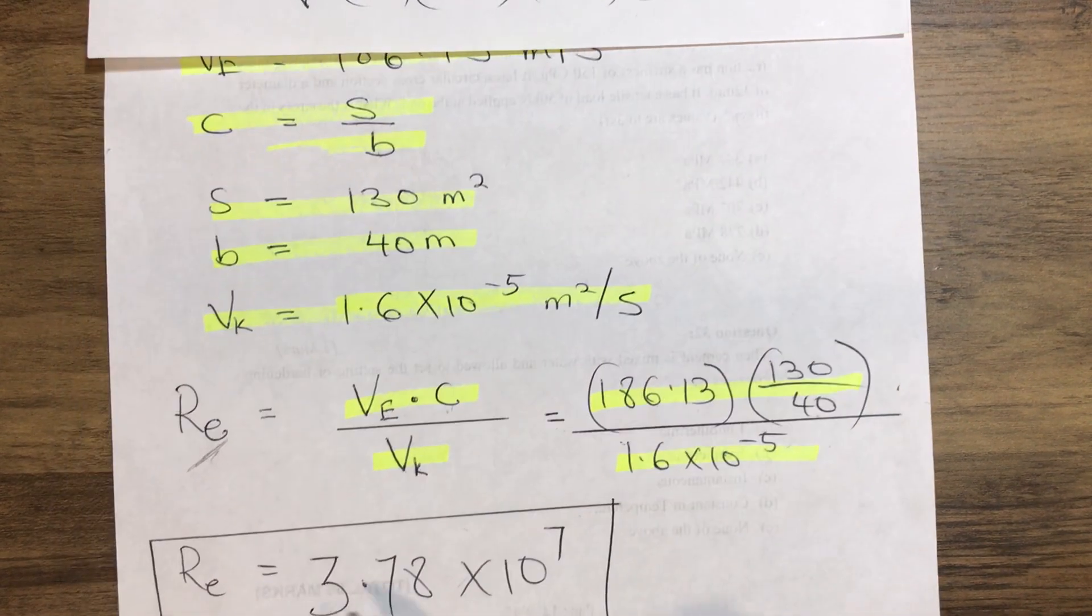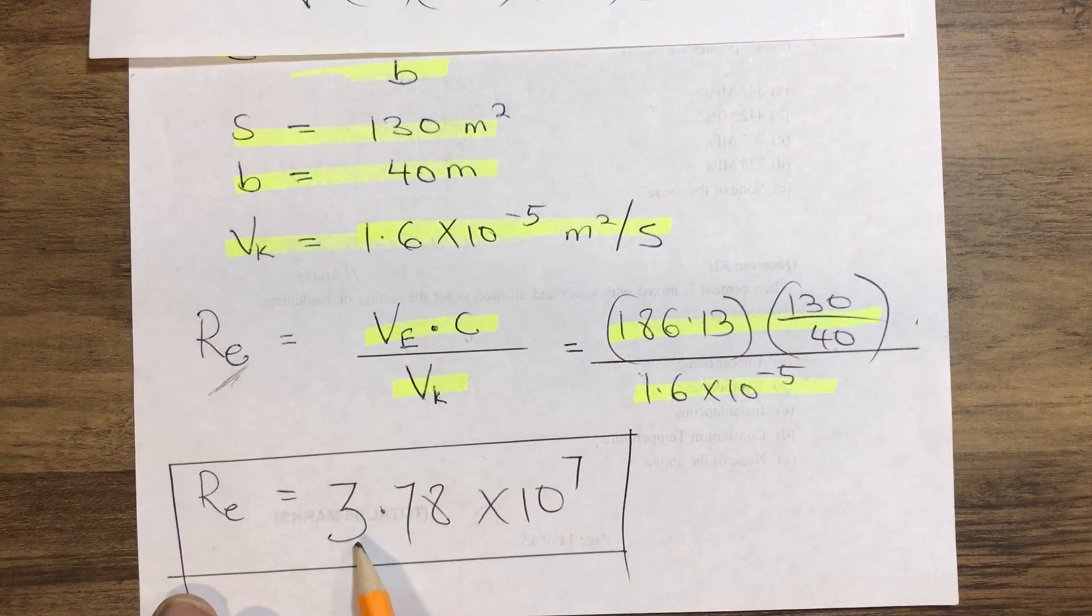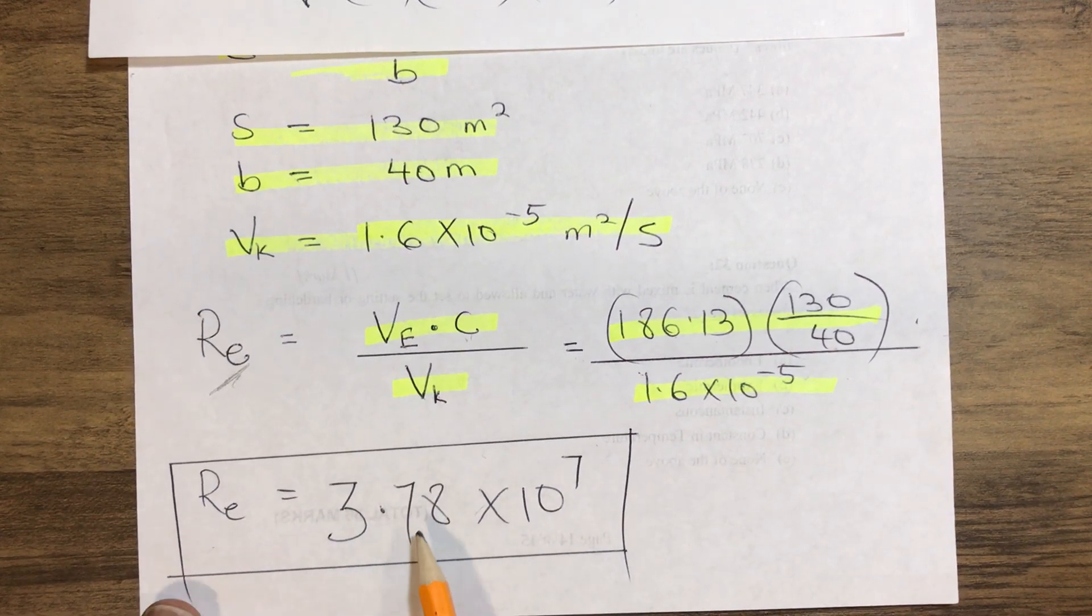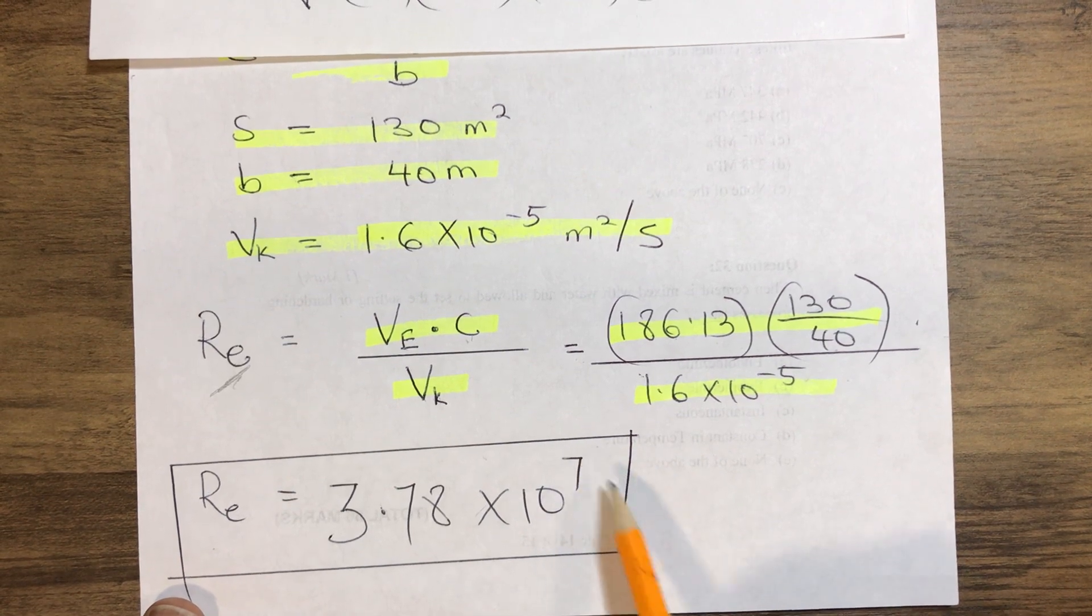So that gives us our Reynolds number to be 3.78 times 10 to power 7.